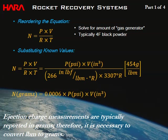Substituting known values and adding the conversion of 454 grams per pound, the equation simplifies to: m_BP (grams) = 0.0006 × P × V, where P is the required pressure and V is the volume of the airframe section. Ejection charge measurements are typically reported in grams, so the pounds-mass to grams conversion is necessary.